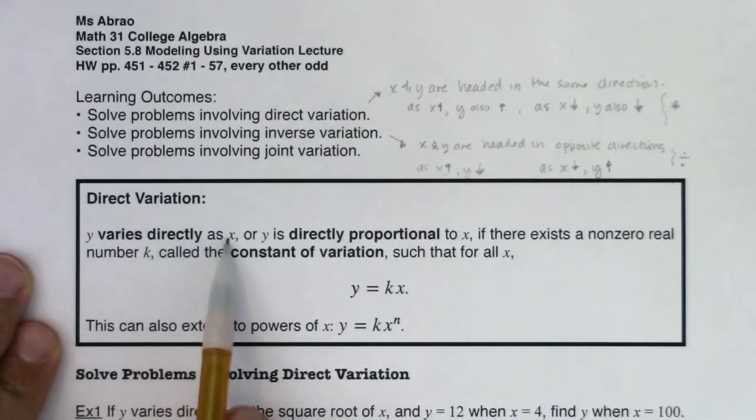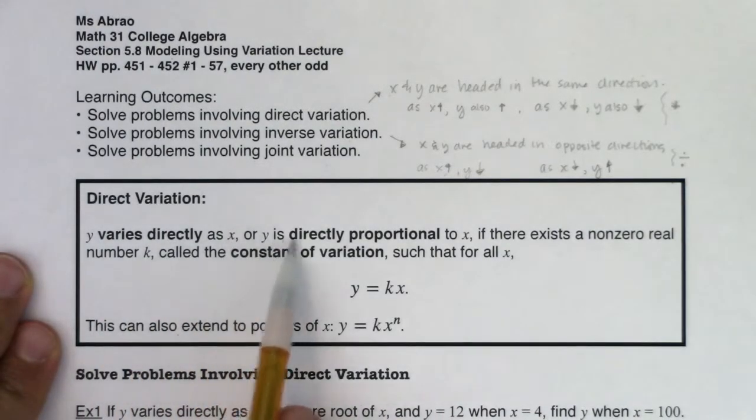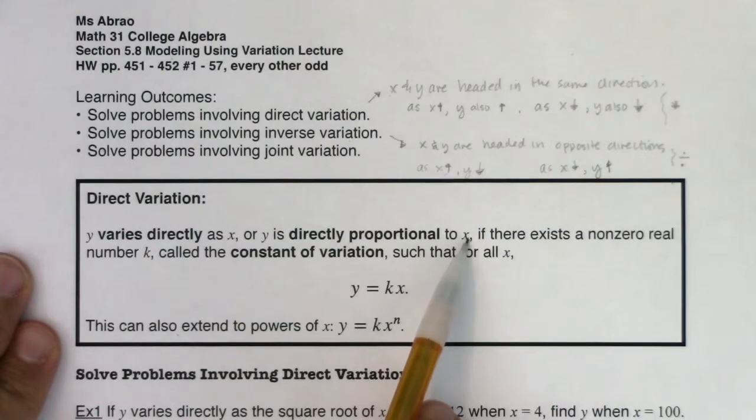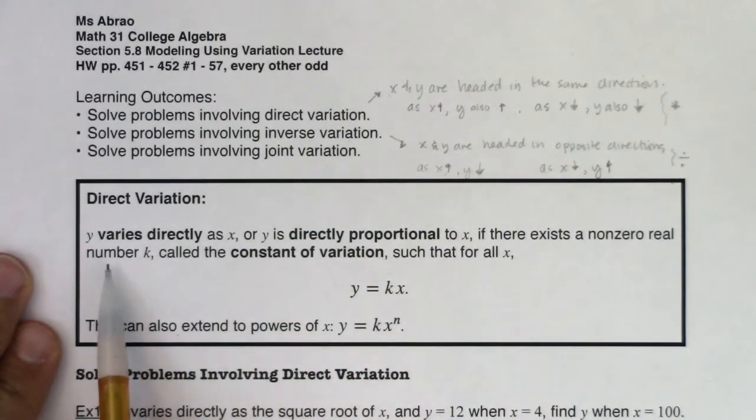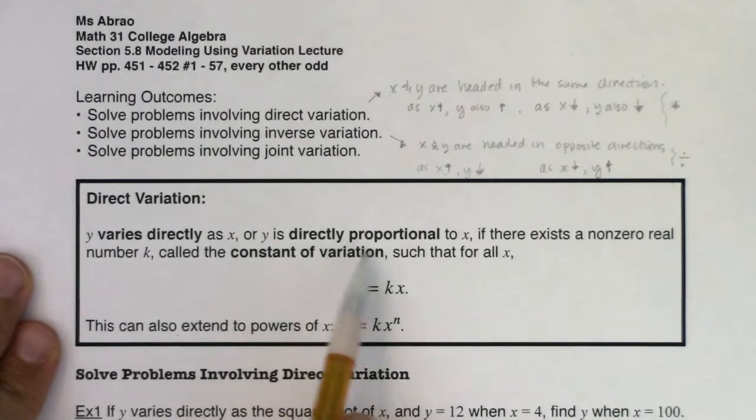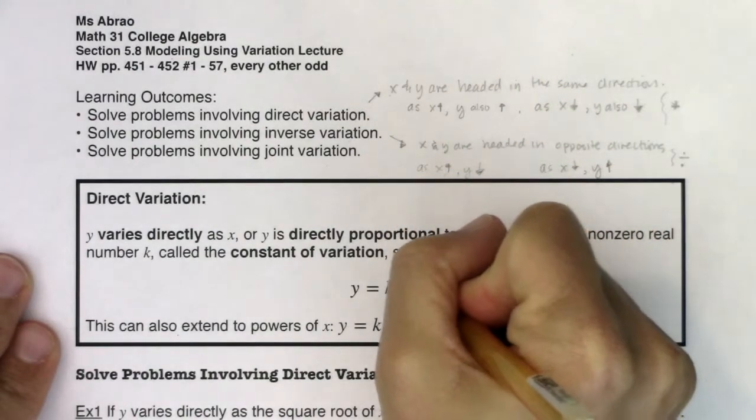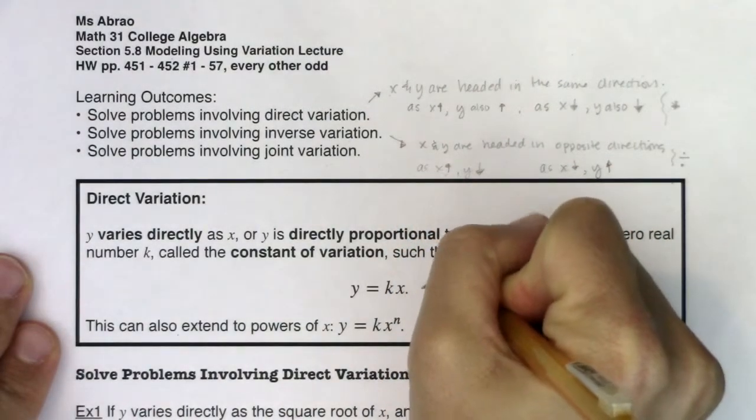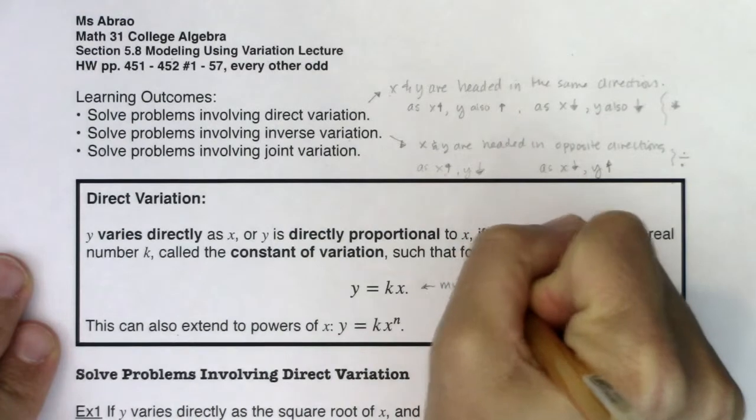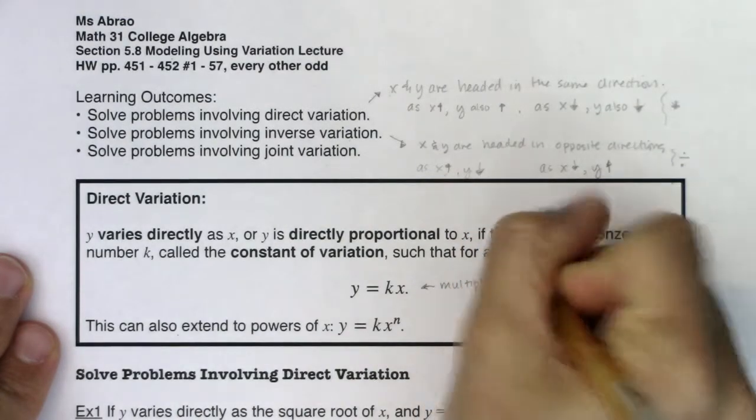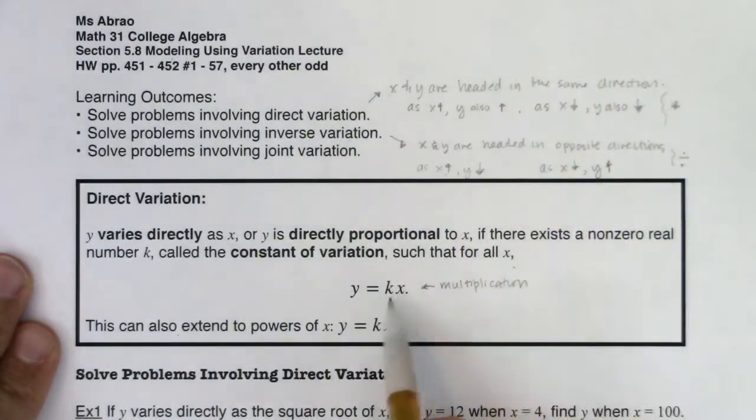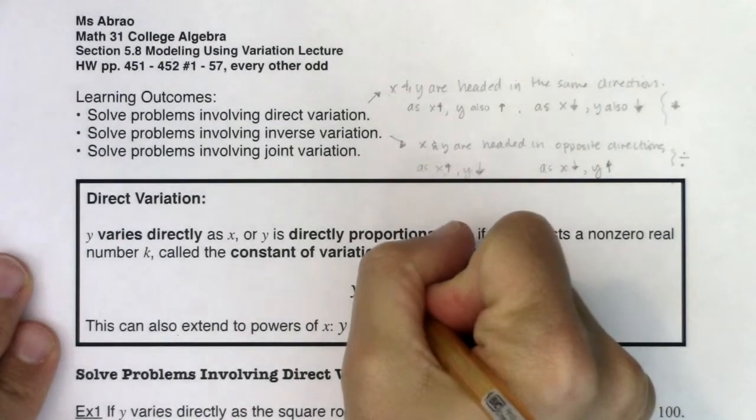So y varies directly as x. Or we could say y is directly proportional to x if there exists a non-zero real number k called the constant of variation such that for all x, y is equal to k times x. So I just want you to take note here. There is multiplication involved. And I mentioned this just up top, right? I said the operation we'll see is multiplication. And I have k times x here.